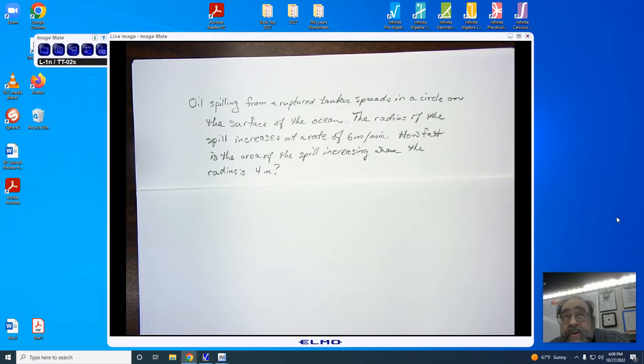Okay, so in front of you, you'll notice I have a problem here. It says oil is spilling from a ruptured tanker, spreads in a circle on the surface of the ocean. The radius of the spill increases at a rate of 6 meters per minute. How fast is the area of the spill increasing when the radius is 4 meters?